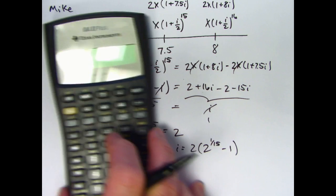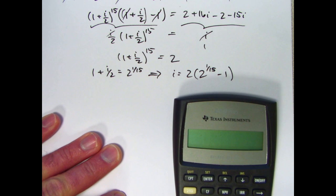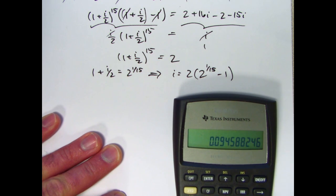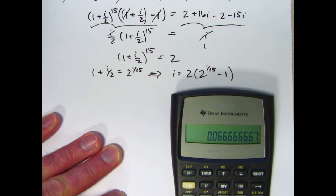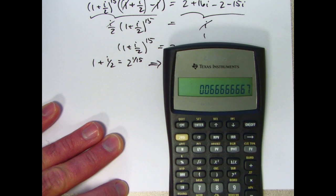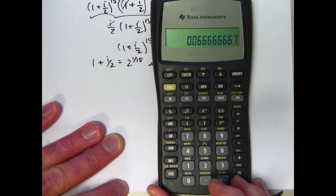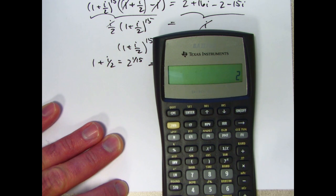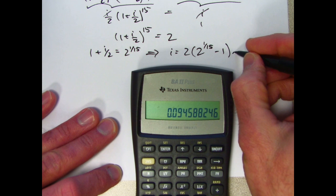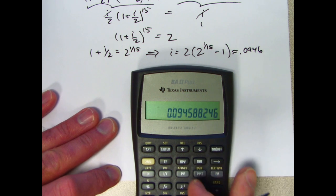Let me calculate 1/15th first. With this kind of calculator, that's probably the best thing to do first. And store it in register 0. And then I want 2 to that power, 2 raised to what's in register 0. That will be 2 to the 1/15th power. Subtract 1 from that, then multiply the result by 2. The answer is about 0.0946 or 9.46%. That is the answer.